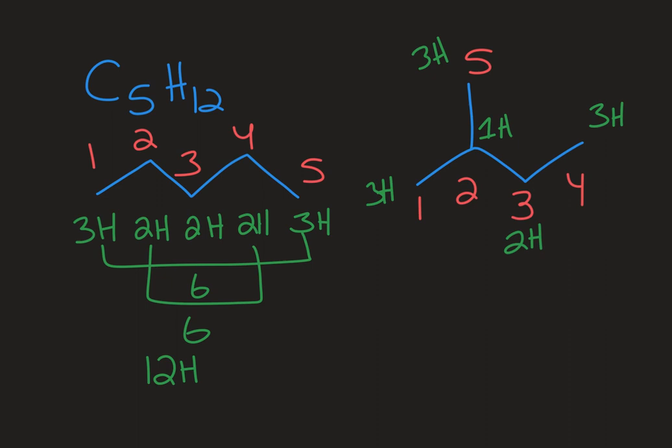And so if we add all of that up again, we have 12 H's, and we can see we have five carbons.